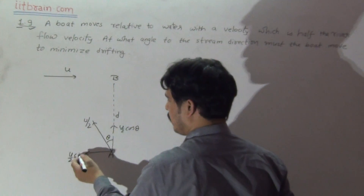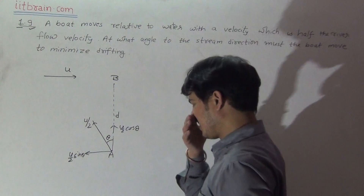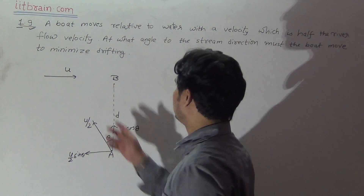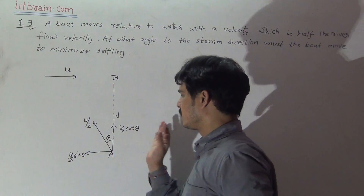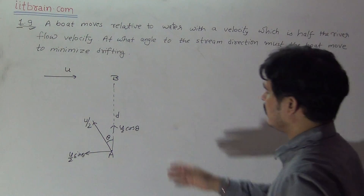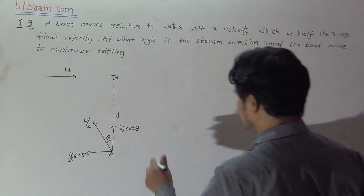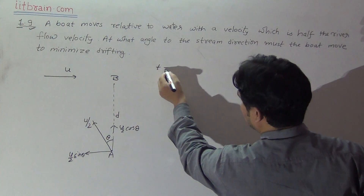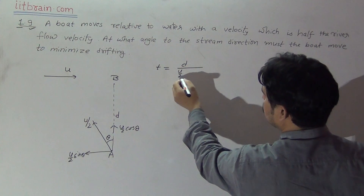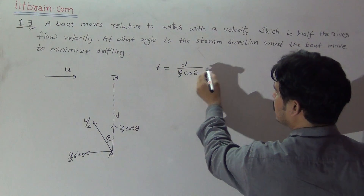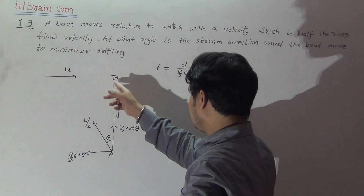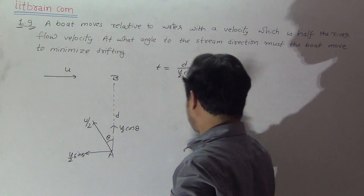Let the total time taken to cross the river be t. Then t equals distance d divided by the velocity component across the river, which is u/2 cosθ. So t = d / (u/2 cosθ). This is the time the boat takes to cross the river.